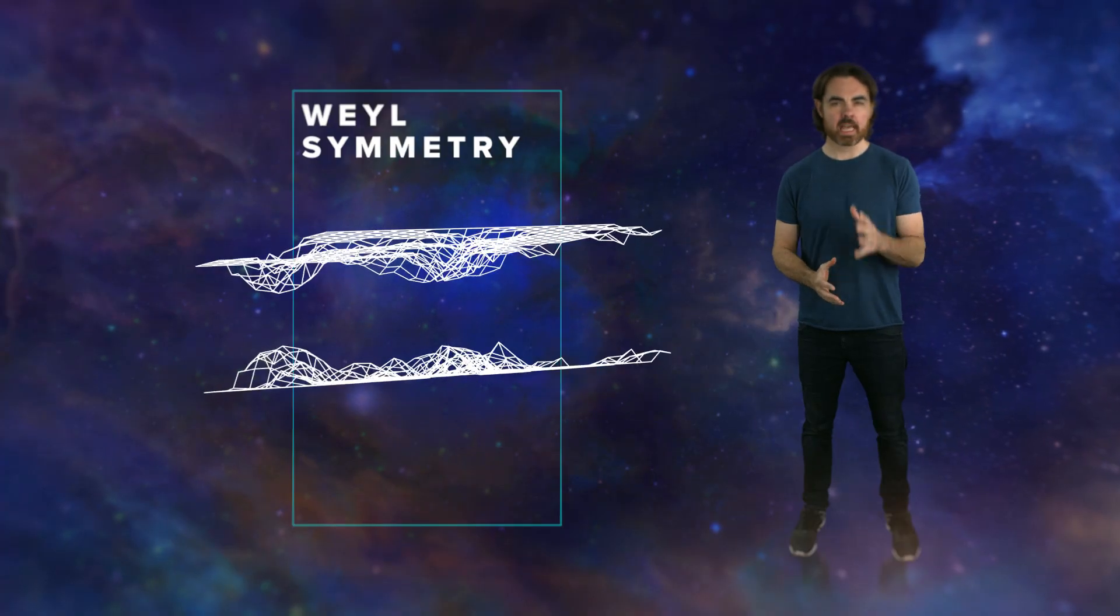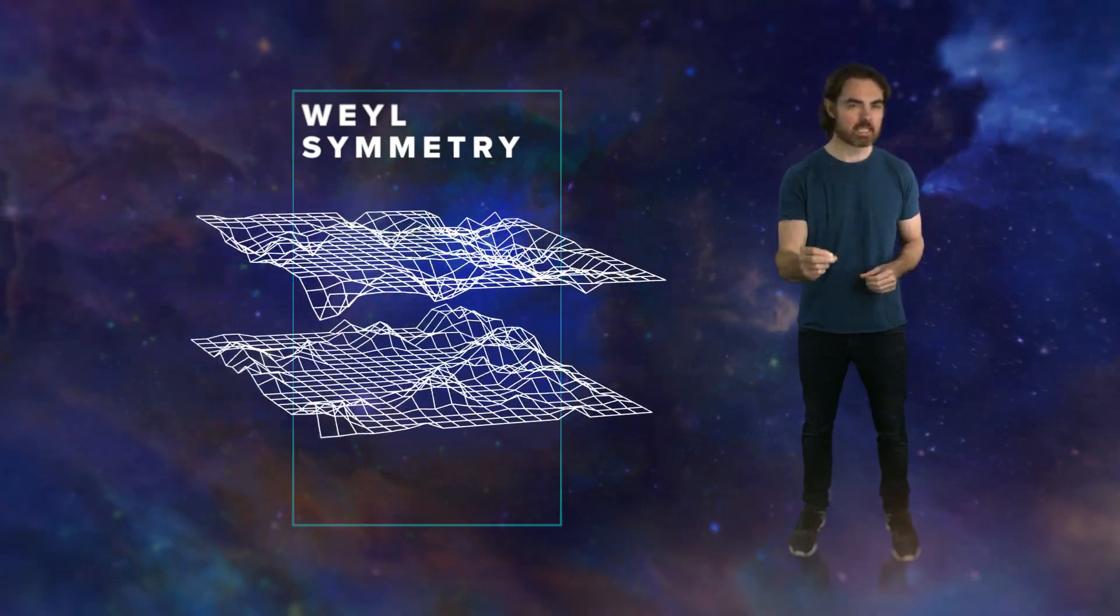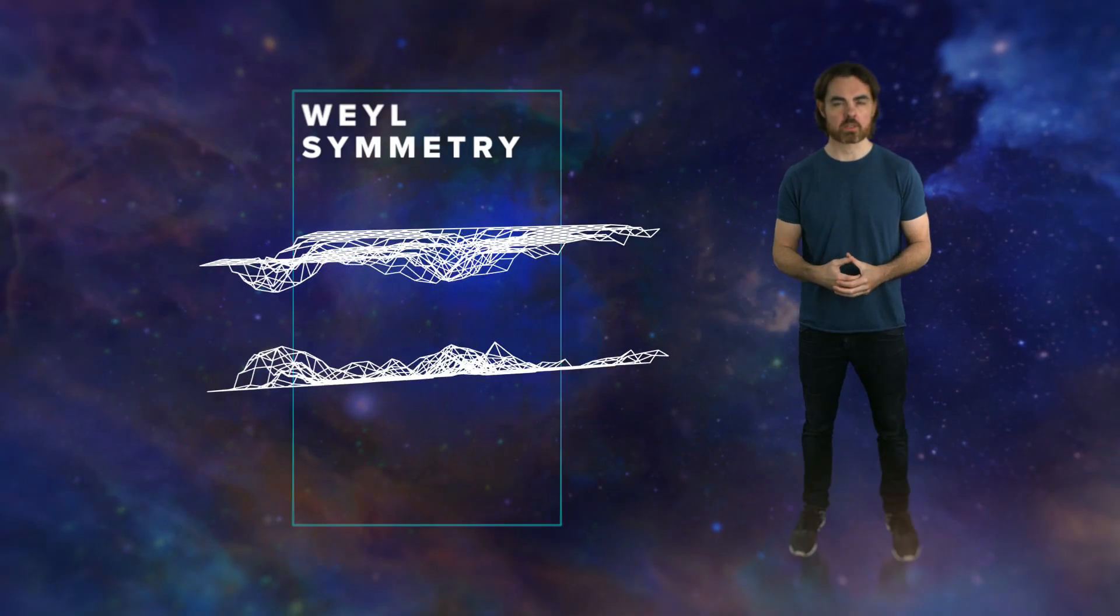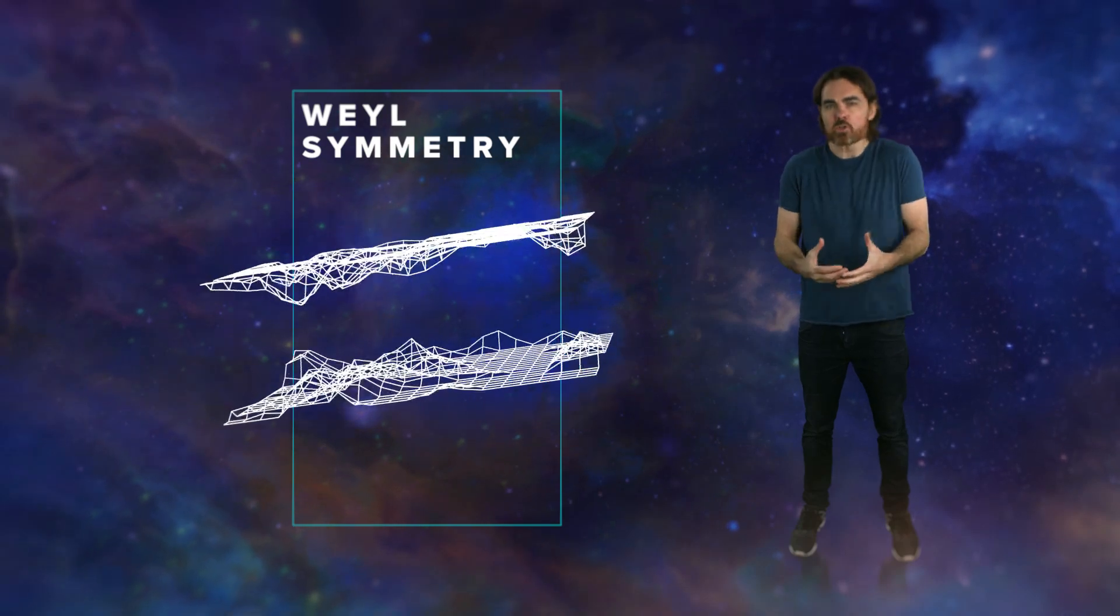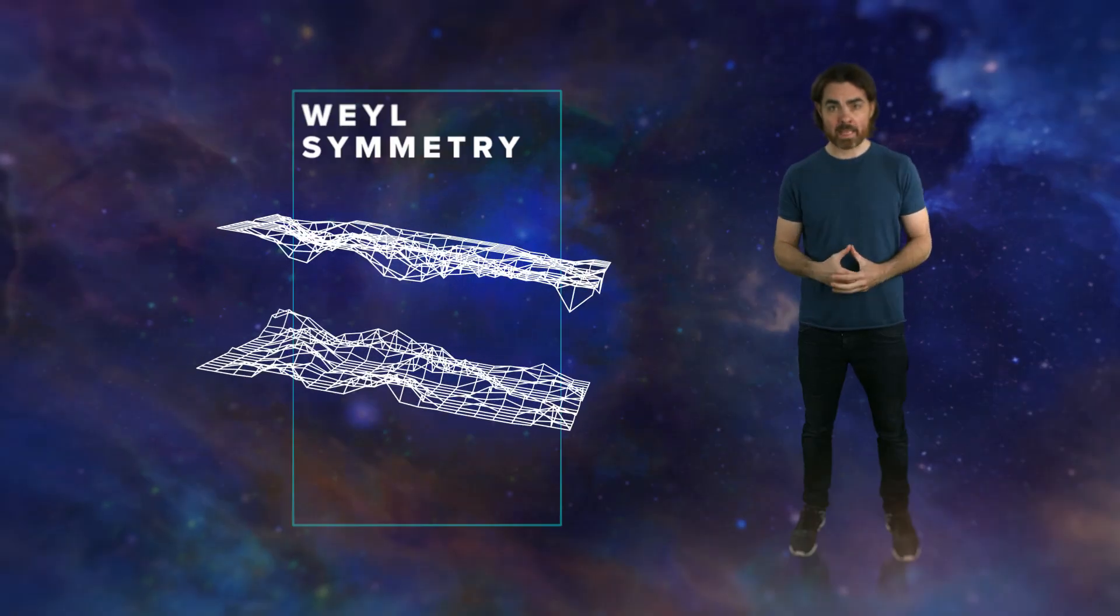That symmetry is Weyl symmetry, or Weyl invariance. This is a weird one. It says that changing the scale of space itself shouldn't affect the physics of strings. Herman Weyl actually came up with this symmetry right after Einstein proposed his general theory of relativity. He tried to use it to unify general relativity with electromagnetism. Fun story, Weyl invented the name gauge symmetry to describe this scale invariance, inspired by the gauge of railroad tracks, which measures the separation of the tracks. Anyway, Weyl symmetry doesn't work. Turns out that in 4D spacetime it does matter whether you change the scale of space and the separation of its tracks.